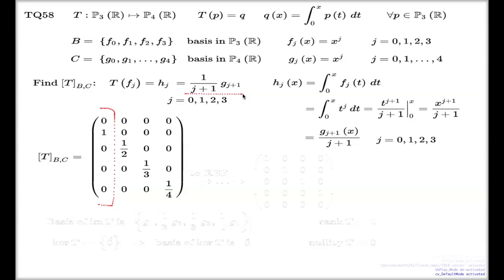Remember, this column - why did I write this column? It's the set of coefficients from the first line in this representation, first line when j equals 0. When j equals 0, the coefficient is 1 next to g1, which is the second element here, and next to every other element there will be zero coefficients.